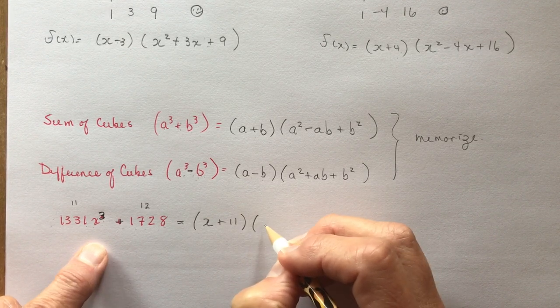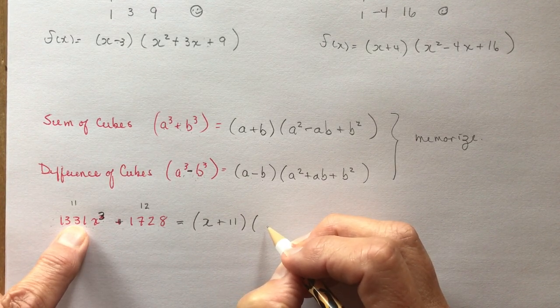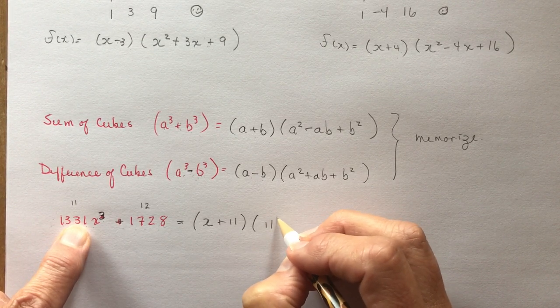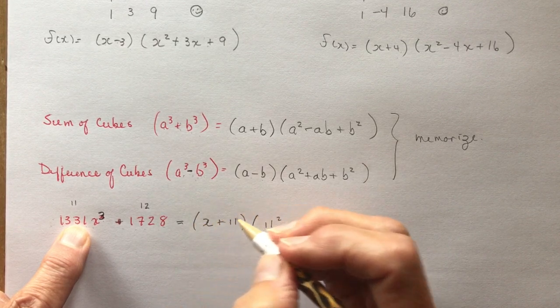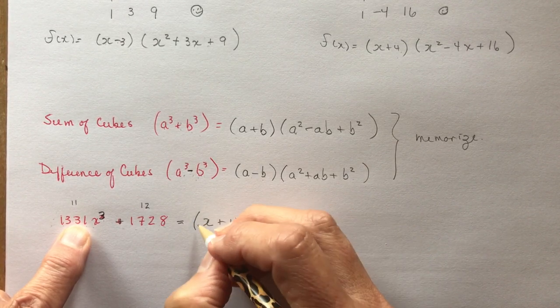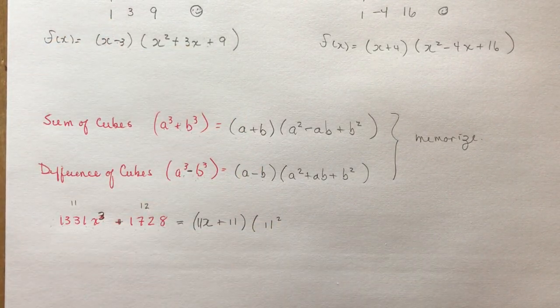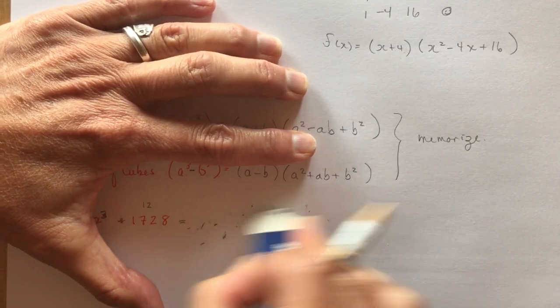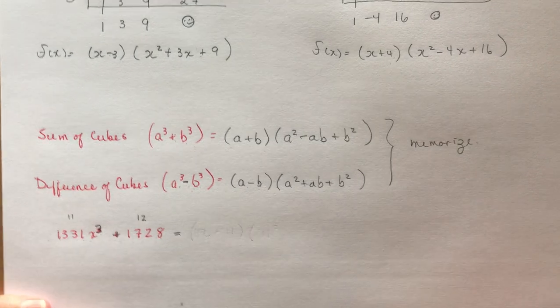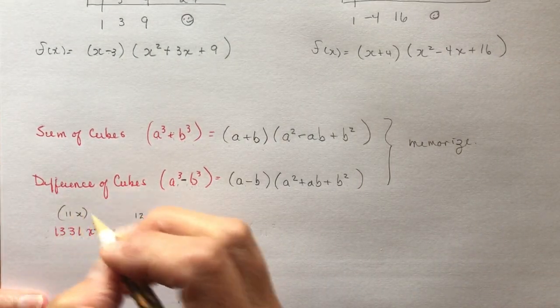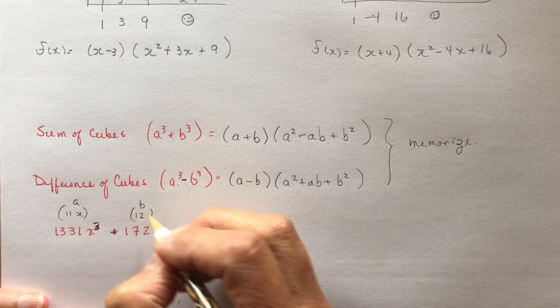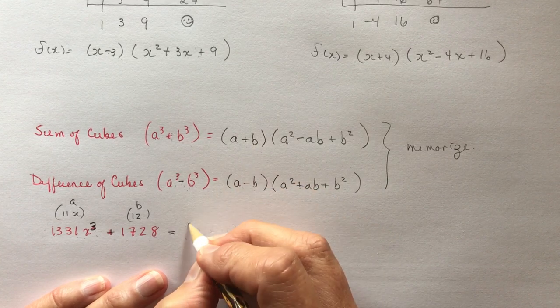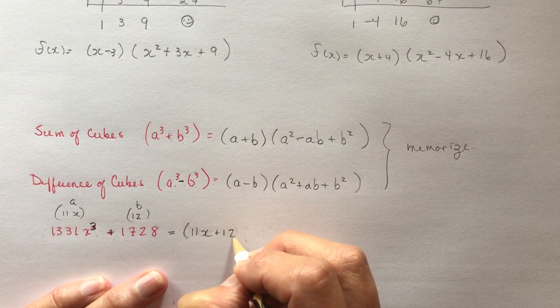And then I have a squared. So my a is 11 squared. I'm not doing that right, am I? This should have been 11. 11x squared plus 12. I'm sorry. Let's find an eraser. Back up, everyone. You're probably worth going, Savera, what are you doing? So this is 11x. That's my a. And my b is going to be 12. So it's the sum of cubes. So I want a plus b. So that's 11x plus 12. That's a plus b.